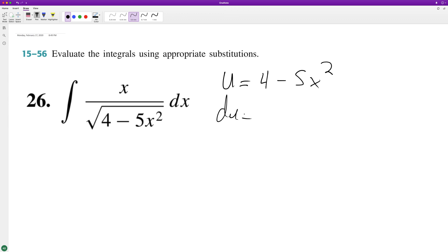And du in this case is going to be equal to negative 10x dx. Well, just negative 10x, excuse me. So to get du equal to dx, we need to multiply du by negative 1 tenth.